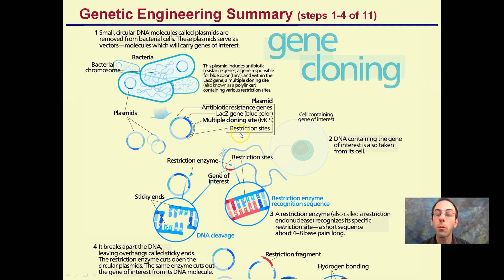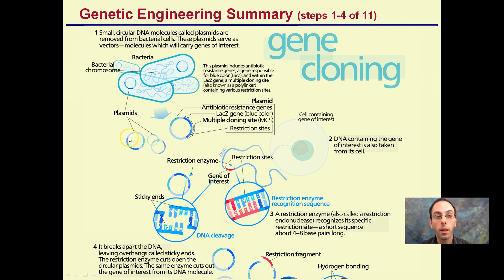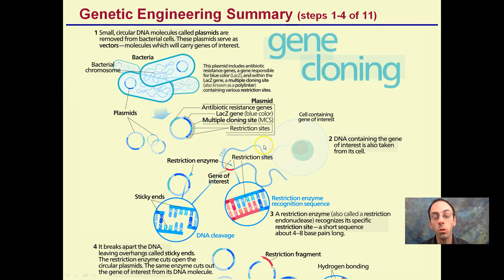We see restriction sites — if you remember from our restriction enzymes, those are areas where there might be specific cut sites. Those plasmids are the small circular regions of DNA found in prokaryotic cells, in this case bacteria. DNA containing the gene of interest is also taken from its original cell. This would be a eukaryotic cell, and we are going to put that gene into our plasmid.